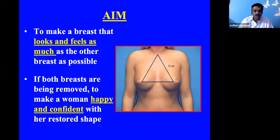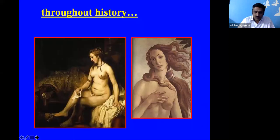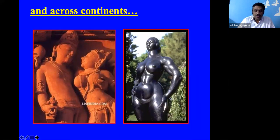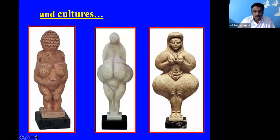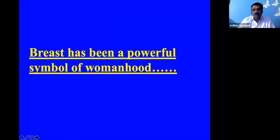The aim of a breast reconstruction is to make it look and feel as much as a breast as possible. If both breasts are being removed, the aim is to make a woman happy and confident with her restored shape. Throughout history and across continents and different cultures, even when mutilated otherwise, the breast has been a symbol of womanhood.